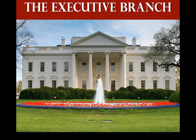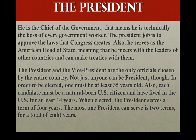This is the White House, the building representing the executive branch. The president is the chief of the government, meaning he is technically the boss of every government worker. Congress makes the laws, and the president approves the laws created by Congress. The president and the vice president serve four-year terms and can be re-elected by the entire country.